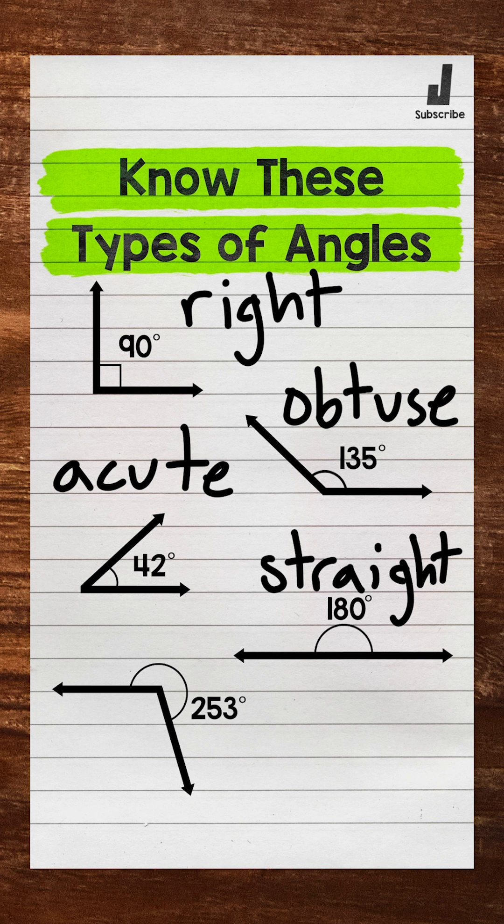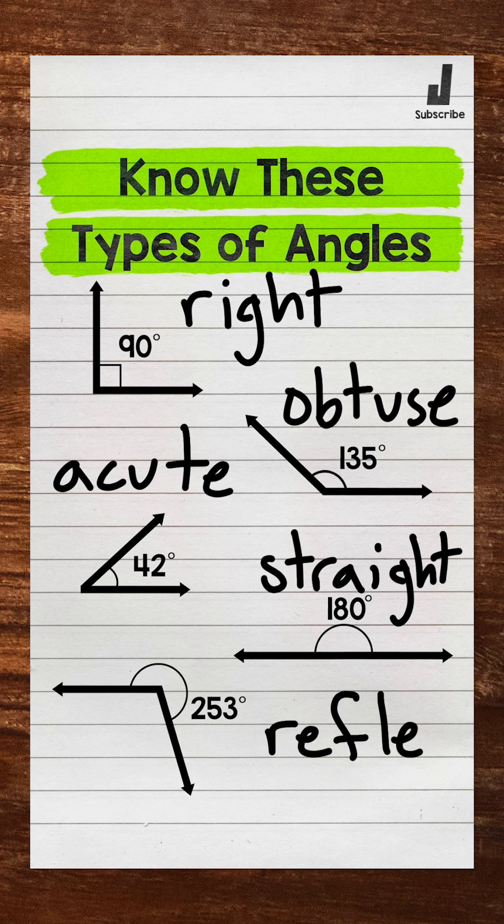And then lastly, we have an angle that is 253 degrees. This is an example of a reflex angle. Reflex angles are greater than 180 degrees and less than 360 degrees, which 360 degrees makes a full circle.